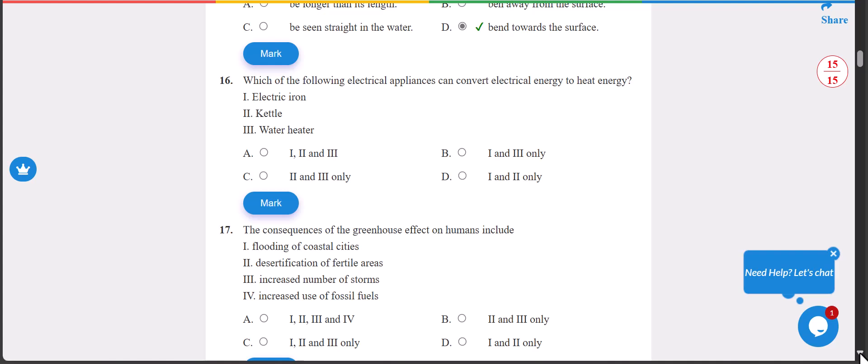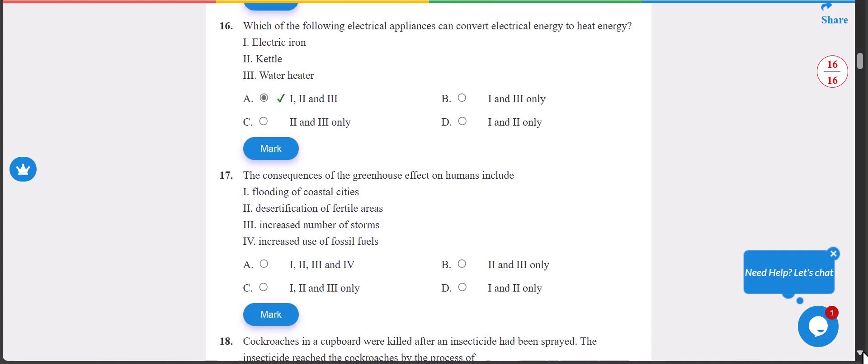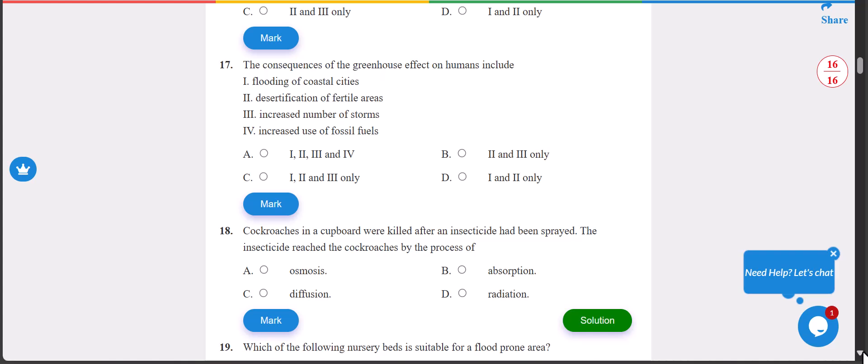Number 16: which of the following electrical appliances can convert electrical energy to heat energy? The answer is all the three - electric iron, kettle and water heater can all convert electric energy to heat. The answer is A.